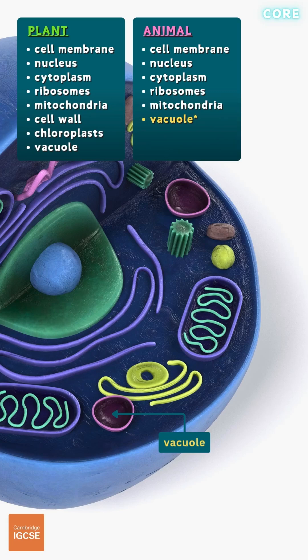Animal cells also have vacuoles, but they're typically much smaller and more numerous.